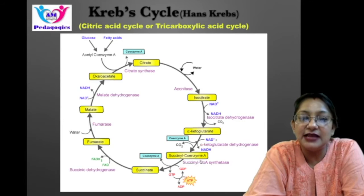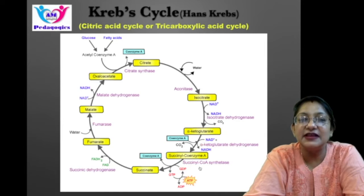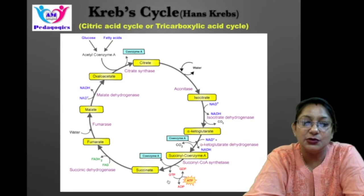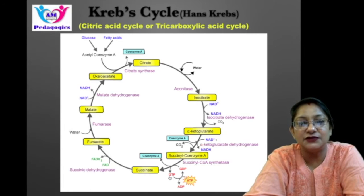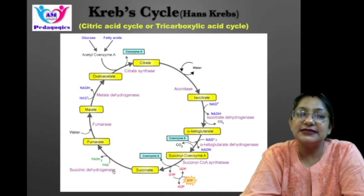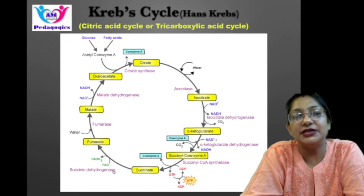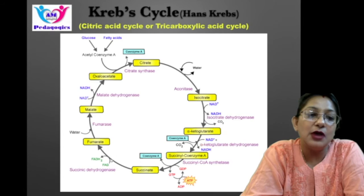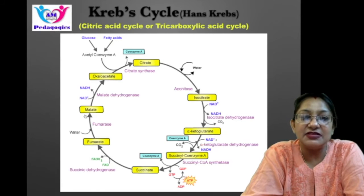In the next step (step 5), succinyl coenzyme A forms succinate. Then in step 6, succinate is oxidized by the enzyme succinate dehydrogenase to form fumarate. In this process, FAD is converted to FADH2.